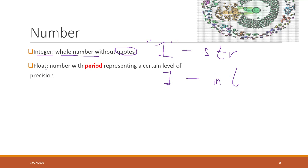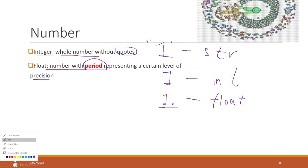Float means that the number has a decimal point, representing a certain level of precision. For example, if you use number 1.0, which indicates decimals — although the values are the same — Python will consider that as a float. That is how we define numbers.